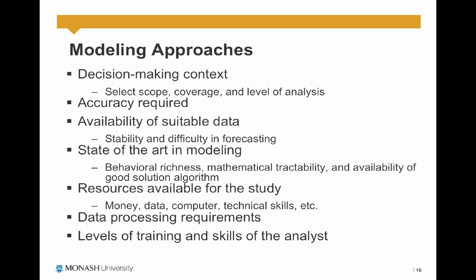There are different approaches to modeling. When you want to model, you need to think about the decision making context, the scope of the modeling, the spatial coverage of the model, and the level of analysis. You also need to think about the level of accuracy required, the availability of suitable data, the state of the art in modeling — behavioral richness, mathematical tractability, and availability of good solution algorithms. What resources do you have: budget, data, computational power, or technical skills? There are also requirements for data processing, as creating a travel demand model from aggregated to disaggregated level requires a lot of data processing, and high levels of training and skills among staff.